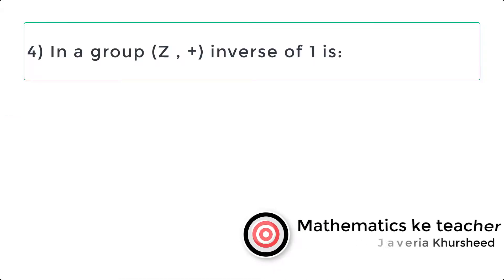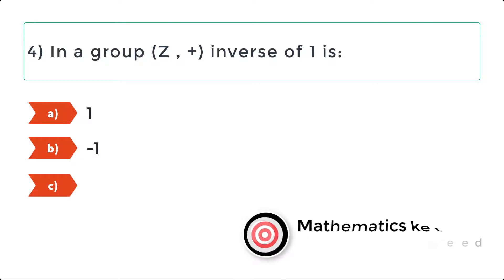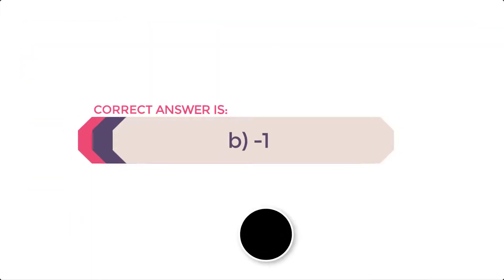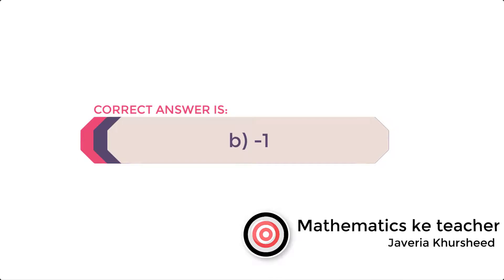Question 4: In a group Z with respect to addition, the inverse of 1 is: A. 1, B. -1, C. 0, D. 2. Correct answer is B. -1.